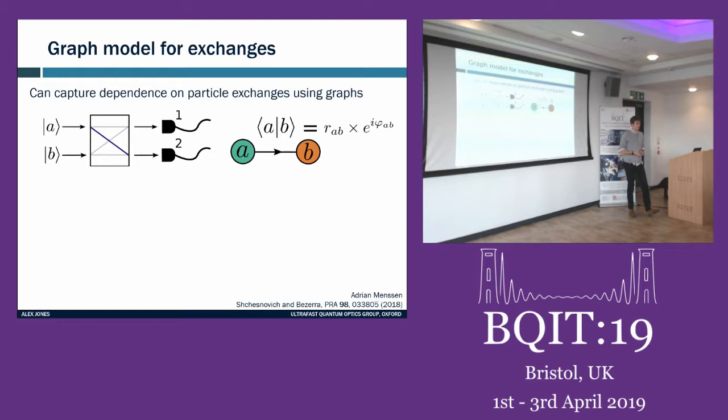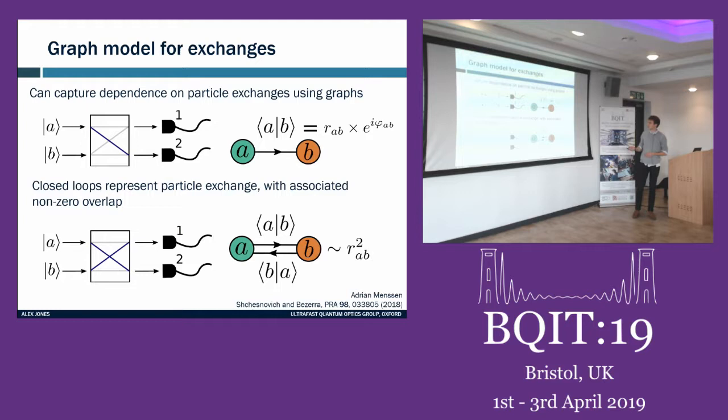The arrow goes from a to b and then back from b to a. These contributions are complex conjugates of each other, so when multiplied together you just get the pairwise distinguishability — the same result as Hong-Ou-Mandel. This is a neat way of figuring out how your states show up in your interference statistics.